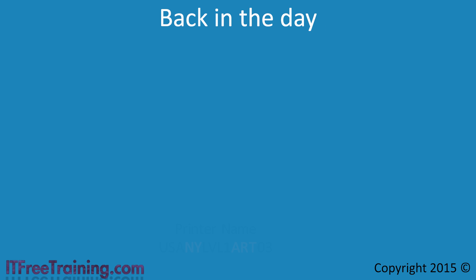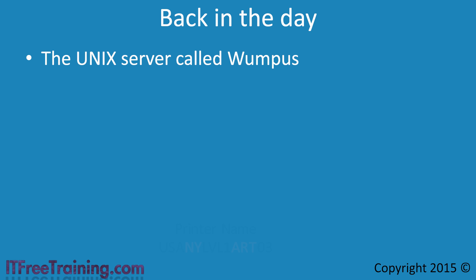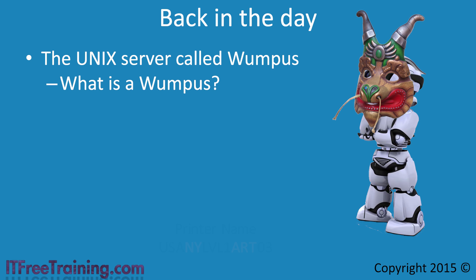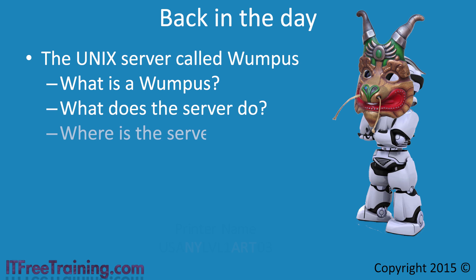In the old days of computing — the 90s — I used a Unix server called Wumpus. What is a Wumpus? It's a rare strong creature that likes to eat people and hang from ceilings. Does the name Wumpus tell us anything about what the server does or where it is? The answer is no. In small networks you could name computers after Simpsons or movie characters, but this does not give any indication of what the computer does and is not considered professional in the IT industry. Many companies in the early days regretted using a naming convention like these and nowadays would not even consider it.